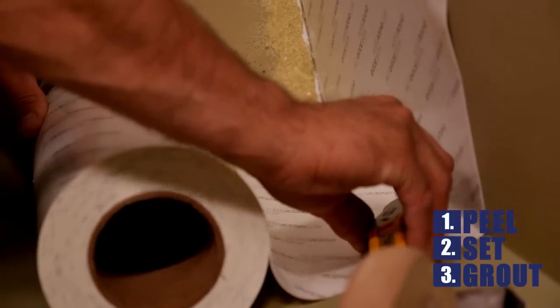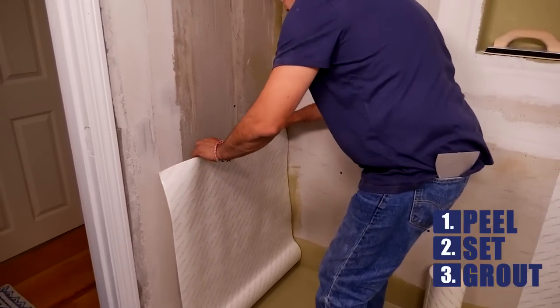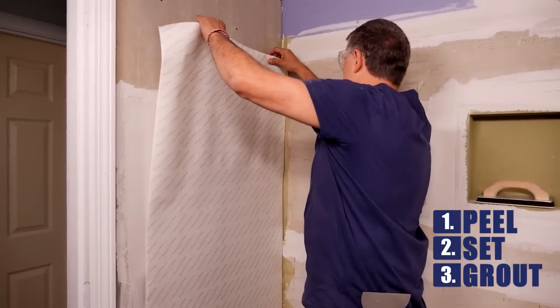Make certain to overlap the floor pan flange. Light initial pressure allows Musclebound to be easily repositioned to achieve proper alignment prior to permanent bonding.